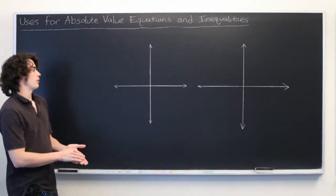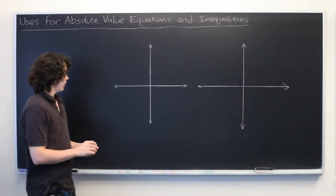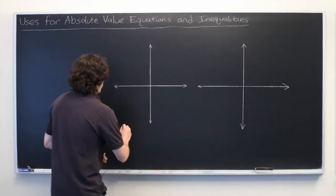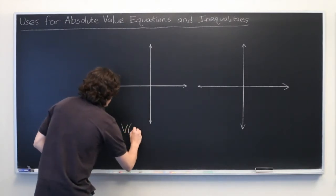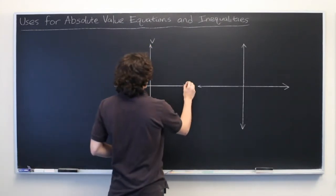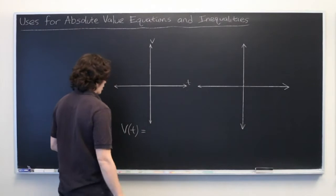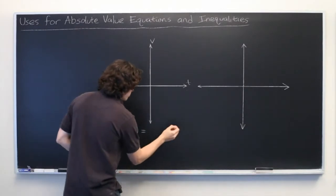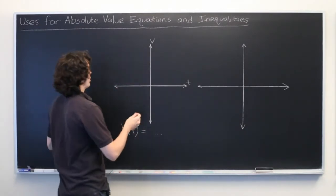So first we'll deal with absolute value equations. Let's say that we have a function, we'll call it V of t, which tracks the velocity of, let's say, a car with respect to time. And it's given by some polynomial. It doesn't really matter.